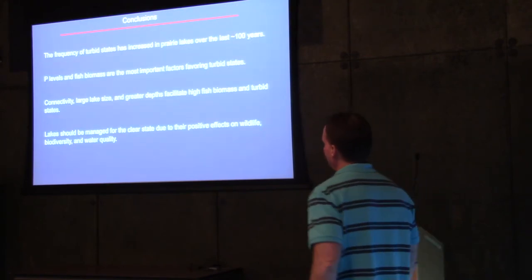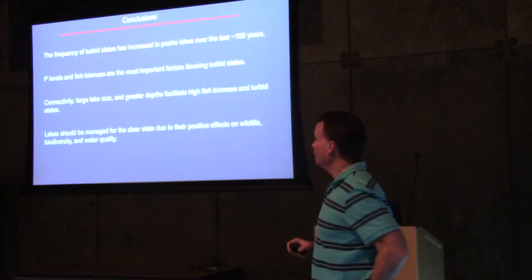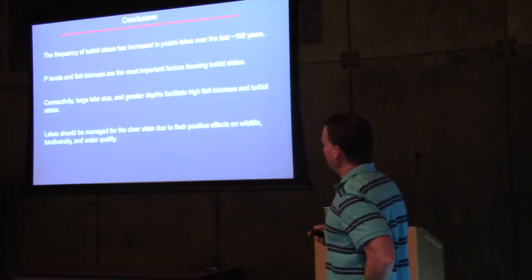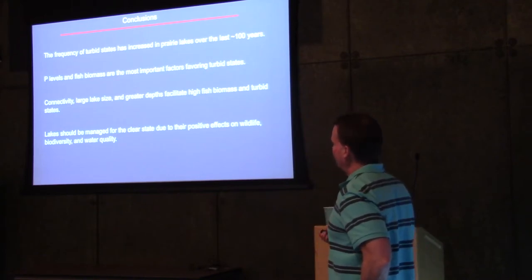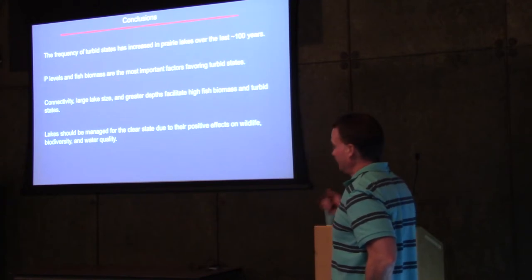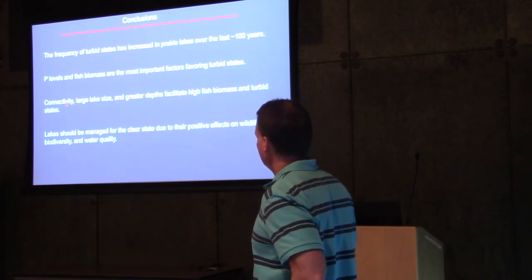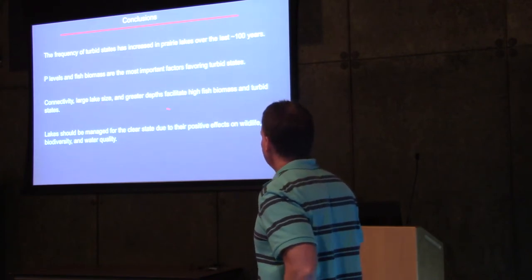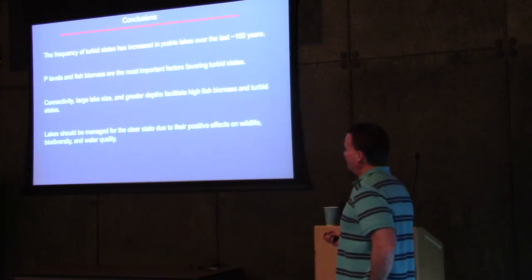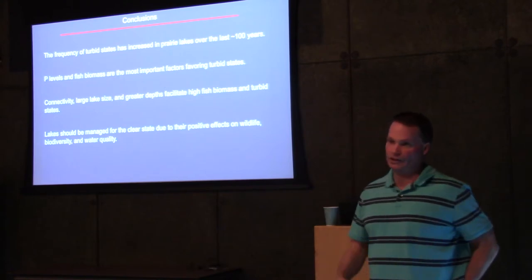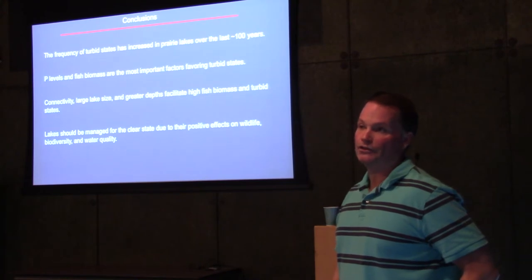So in conclusion, the frequency of turbid states has increased in the prairie lakes over the last 100 years. There weren't any turbid water states until about 60 years ago, but now we've got about half the lakes in the prairie regions of Minnesota being turbid. We can predict pretty well that turbid water state based on phosphorus levels and fish biomass. They seem to be the most important factors causing it. And we can predict fish biomass based on connectivity, large lake size, and greater depths. They all facilitate high fish, which favor turbid water states. Lastly, they should be managed for the clear water state through the positive effects on wildlife, biodiversity, water quality, and all kinds of other ecosystem services. So, thank you very much.